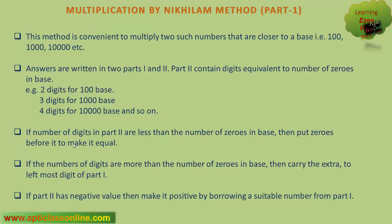If number of digits in part 2 are less than the number of zeros in base, then put zeros before it to make it equal. If the number of digits are more than the number of zeros in base, then carry the extra to the leftmost digit of part 1. If part 2 has negative value, then make it positive by borrowing a suitable number from part 1.